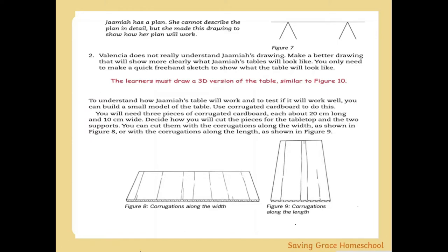To understand how this table works, build one. An important piece of information: corrugated cardboard has specific properties. The corrugations have direction — corrugated cardboard has two flat pieces with a sinusoidal up-and-down shape on the inside, glued together to make one piece.